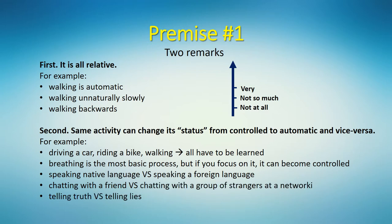Chatting with friends is mostly automatic for most people, but chatting with a group of strangers at a networking event might require a lot of cognitive effort, especially for a socially anxious, self-conscious person. Telling truth is generally automatic, while telling lies is generally controlled for most good people.